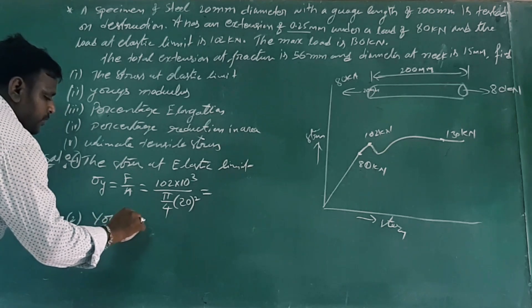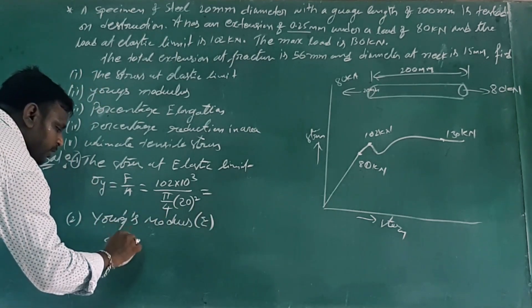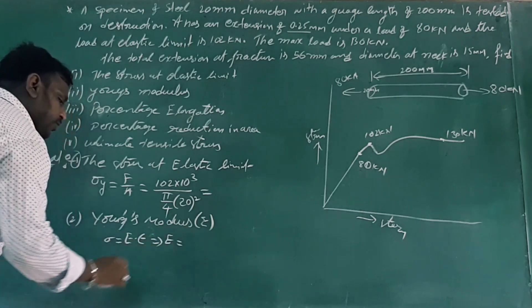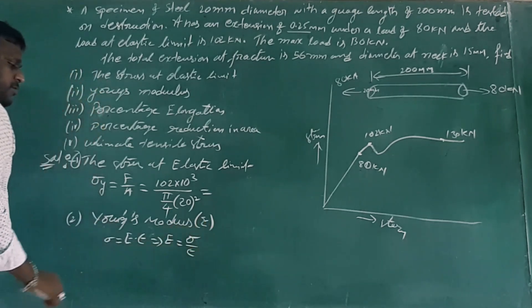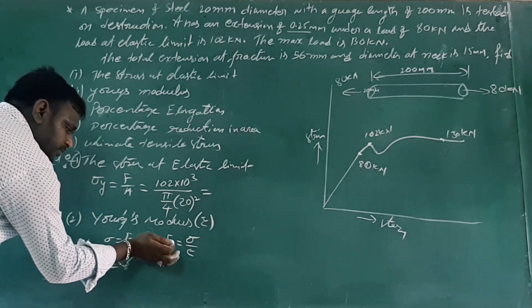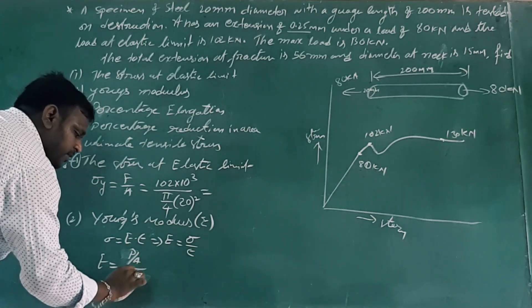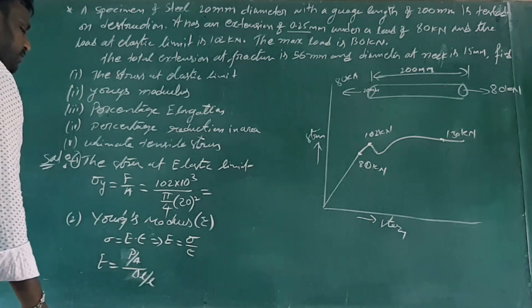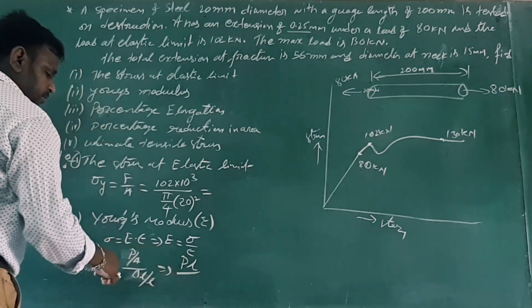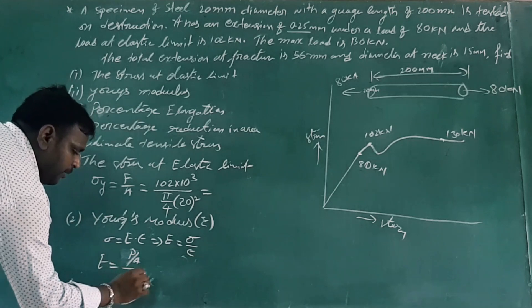Next, we calculate the modulus of elasticity E. According to Hooke's law, sigma equals E times epsilon. Therefore E equals sigma divided by epsilon. We can write E equals sigma_P divided by epsilon, where epsilon equals delta L divided by L. So E equals sigma_P times L divided by delta L.